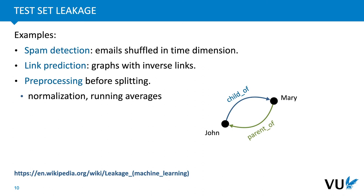Another instance of test set leakage occurs in link prediction. Here we have a knowledge graph where the goal is to predict whether a link is likely to exist between two nodes. If there are reciprocal links — like a child-of link and a parent-of link — and we withhold links randomly, we might withhold the child-of link while training on the parent-of link, making the task trivially easy. The fix is to either remove inverse links or ensure that when splitting, both inverse links end up in the same set.